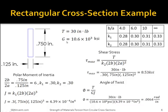Taking the problem that I solved before, I will use the table from the previous slide to solve for the shear stress and the angle of twist. The first part is to solve for the polar moment of inertia, which requires deriving k1. To derive k1, I need b over a, which equals 6. Going to the table, k1 equals 0.3. To solve for the shear stress, I also need k2, and k2 for b/a = 6 equals 0.3. Taking those values, the shear stress equals 8.53 ksi and the angle of twist equals 0.0064 radians per inch.